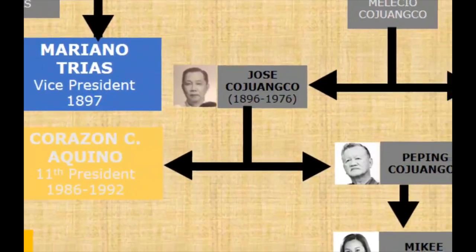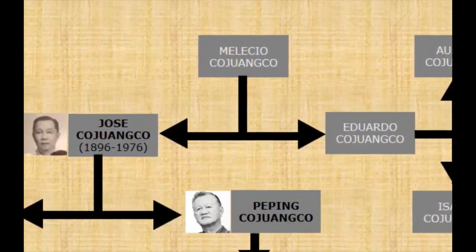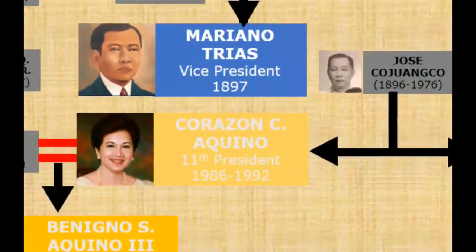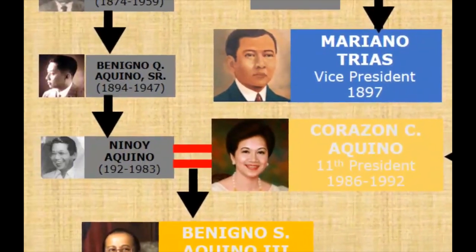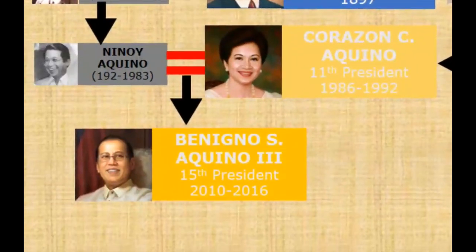Now, let's go back to the Cojuangcos again. Eduardo Cojuangco, as already mentioned earlier, had a brother, Jose Cojuangco, who also served in the House of Representatives, representing the 1st District of Tarlac from 1934 to 1946. His daughter was Corazon Cojuangco, who married Senator Ninoy Aquino. Corazon Cojuangco Aquino would later become the first female president of the Philippines and the 11th president, starting with Emilio Aguinaldo, serving from 1986 to 1992. Her son, Benigno Simeon Aquino III, would also follow in her footsteps and be elected as president in 2010, serving until 2016.